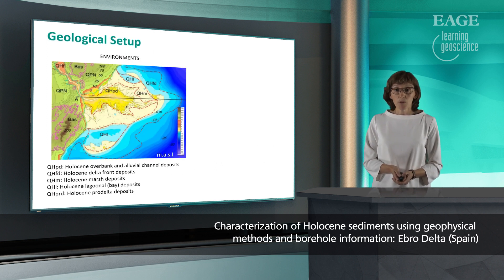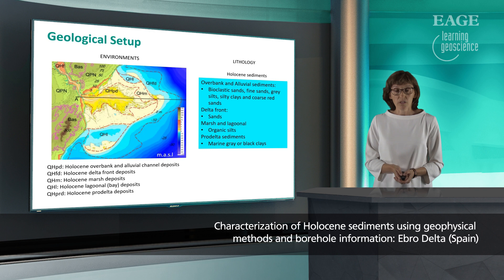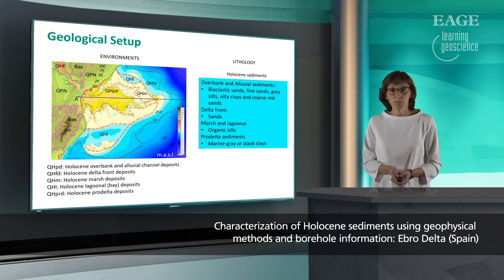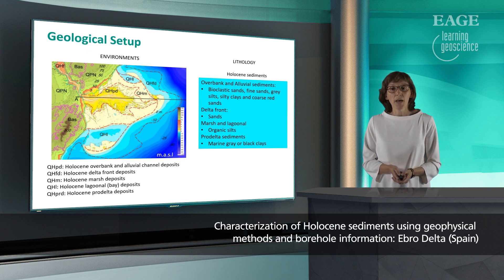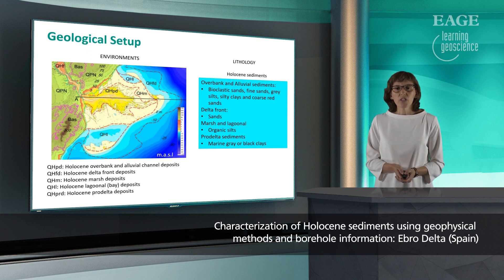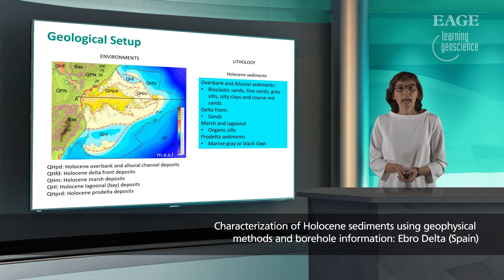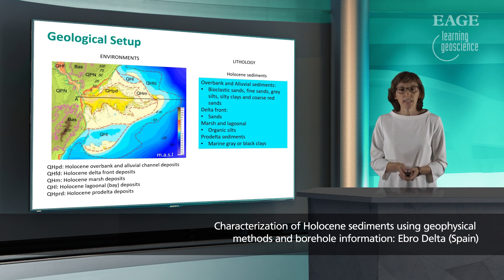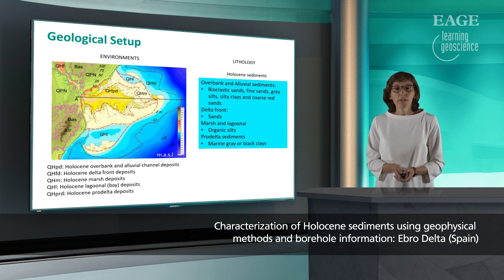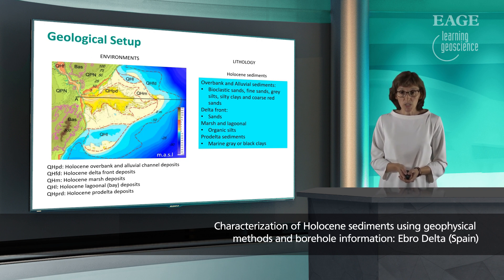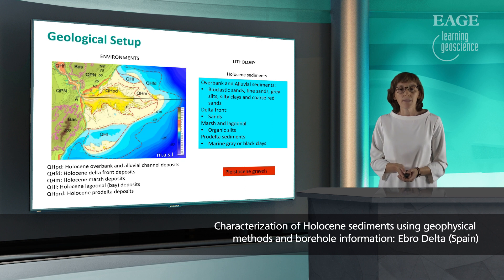The Holocene sediments in the Ebro Delta are related to five major environments: Overbank and Alluvial, Delta Front, Marsh, Lagunal, and Upper Delta sediments. Four of these environments can be seen on the surface, as shown in the map where the limits between them have been marked with dashed lines. The lithology includes a mix of sands, silts, and clays for alluvial deposits; mainly sands at the Delta Front environment; organic silts predominant in marsh and lagunal; and marine clays for Pro-Delta sediments. These Holocene sediments overlie Pleistocene gravels that act as a key surface to understand subsidence phenomena.